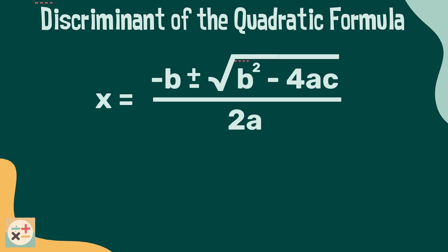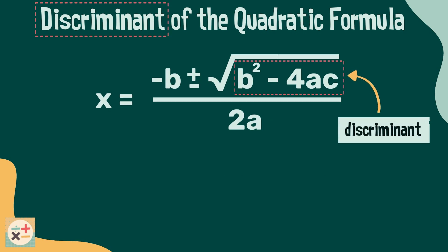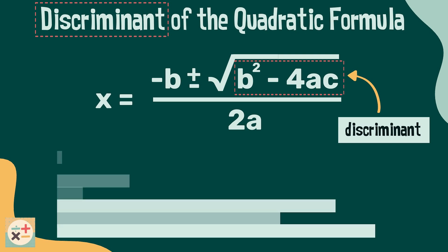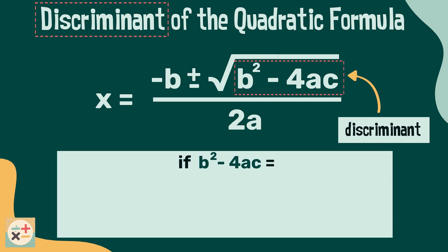This part of the quadratic formula under the square root sign is called the discriminant, and it can tell us how many solutions the equation has. If the discriminant calculates to a positive number, there will be two solutions.